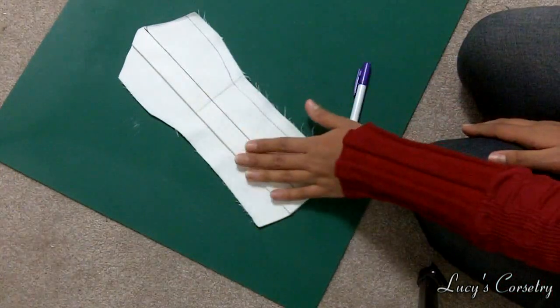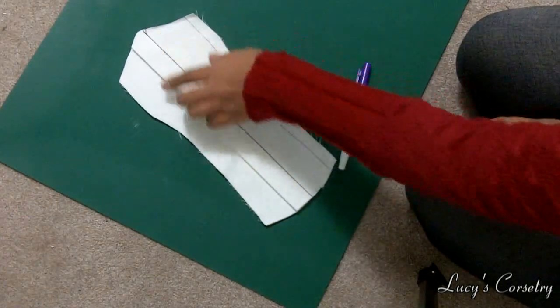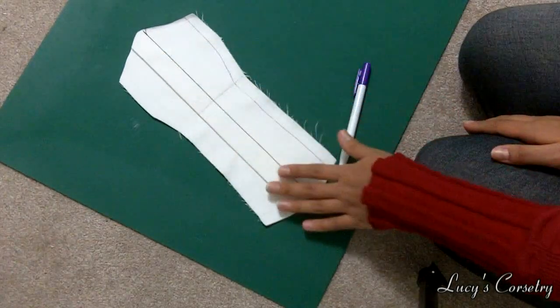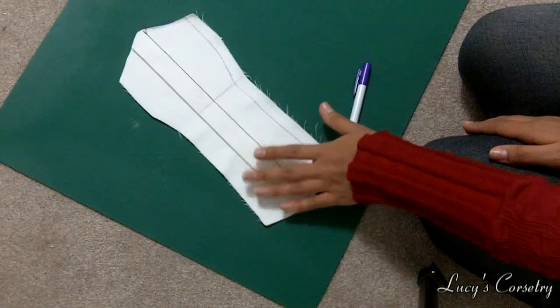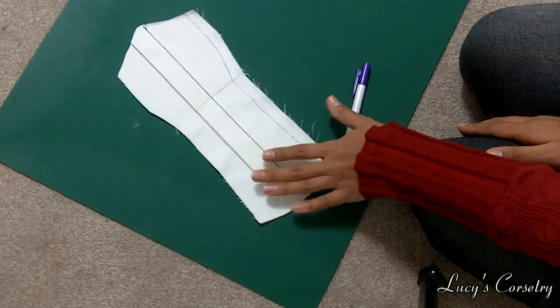If you're clever with this you can also do some print matching in the center front there and it can basically make the front of the corset look almost seamless as if it didn't have a busk there in the first place if you're really careful with it.